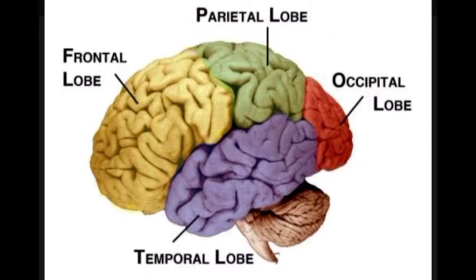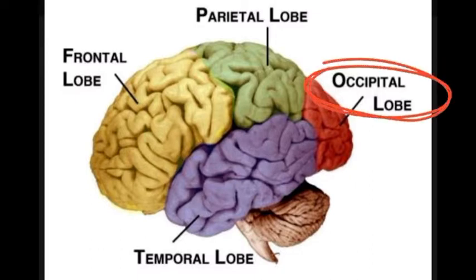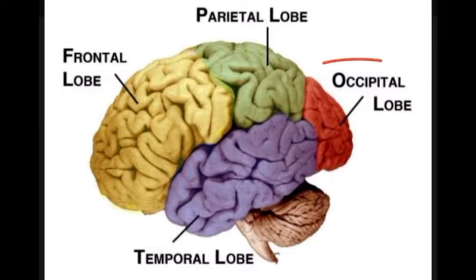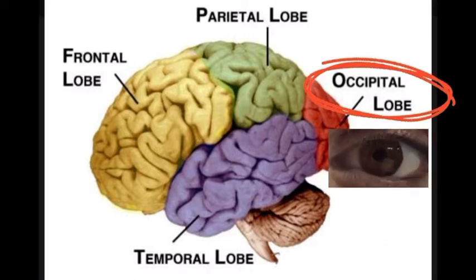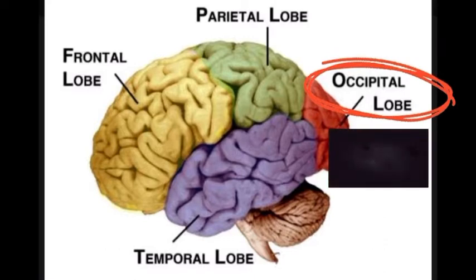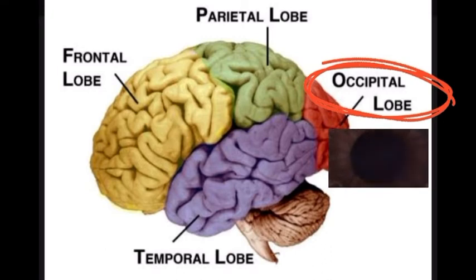Moving on, let's talk about the occipital lobe. The occipital lobe is responsible for visual perception, local orientation, and shape perception. The common NCLEX question we get tested on for the occipital lobe is regarding vision.